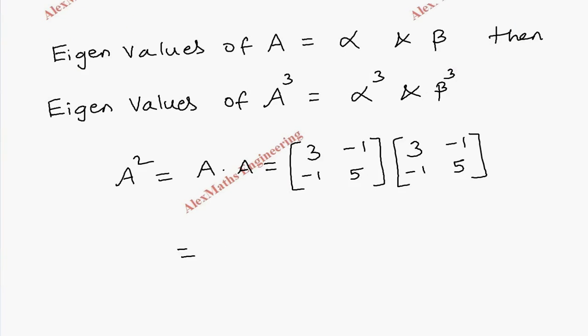As per the procedure, we have to take the first row and multiply the corresponding elements of the first column. So we get 3 into 3, 9, then minus 1 into minus 1, plus 1. This is the first element. Then first row with second column, so minus 3 and minus 5. Then second row with first column, minus 3, minus 5. We always have to multiply the corresponding elements: first element with first element, second element with second element. Similarly, minus 1 into minus 1, plus 1, then 5 into 5, 25.